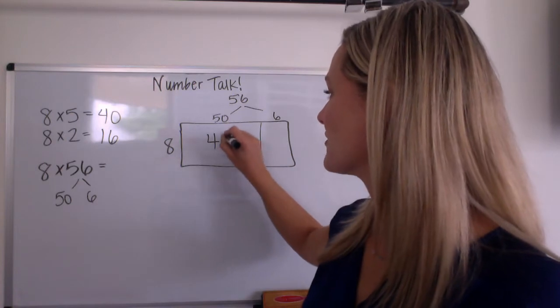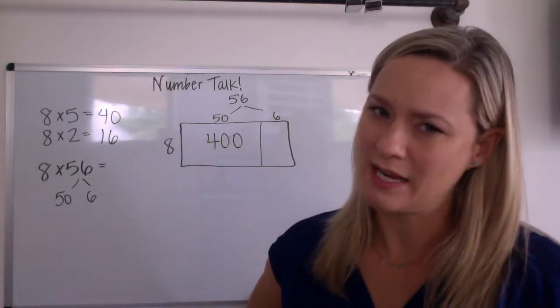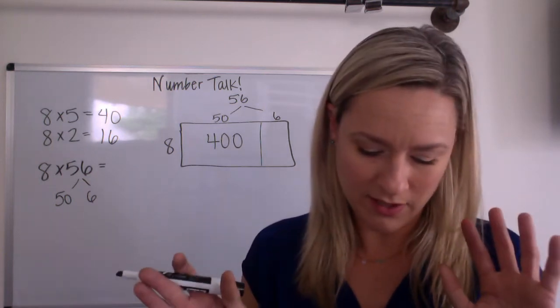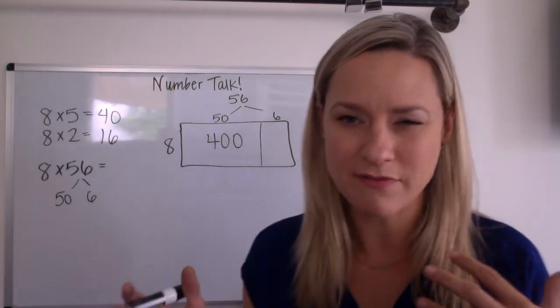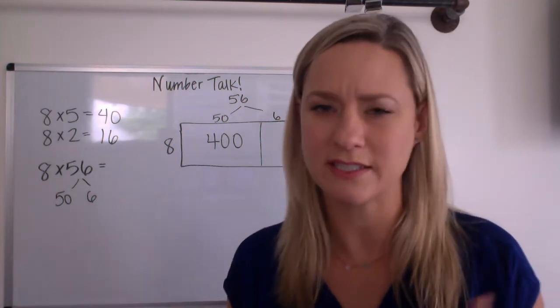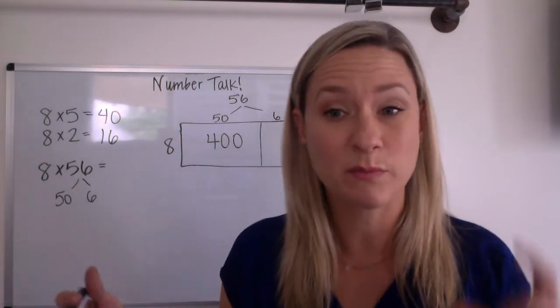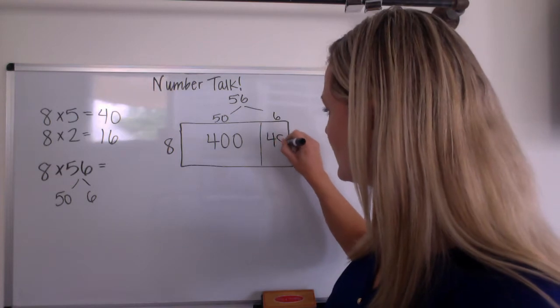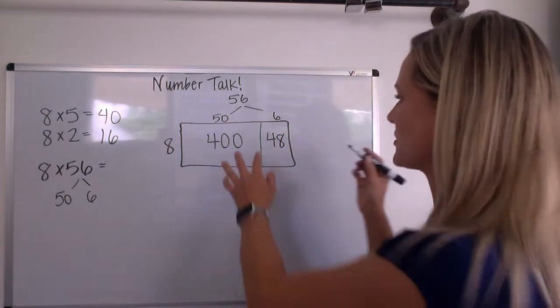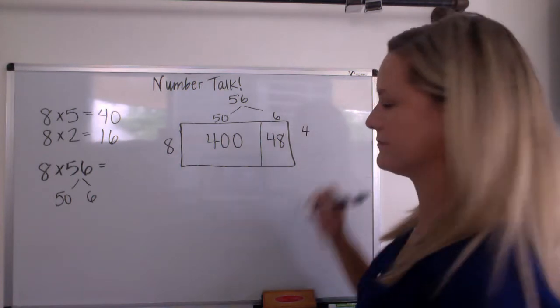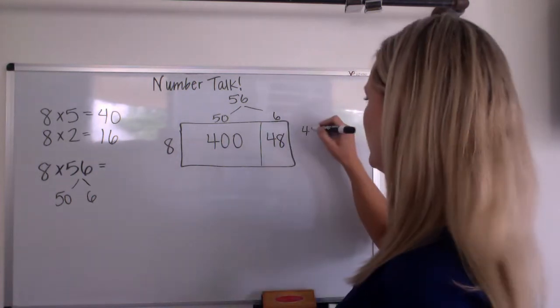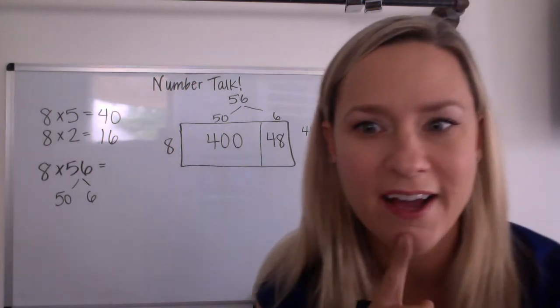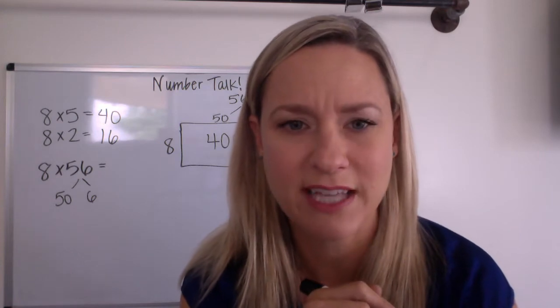All right, so 400 would go there. Now, I have eight times six. Eights and sixes are kind of harder for me to think about in my mind, so usually I think about eight times five to help me with eight times six. So eight times five is 40, so eight times six would be one more group of eight. So 48. I'm going to guess some of you probably did that, and then maybe you joined those together. So 400 plus 48 equals 448. Did anybody do that?